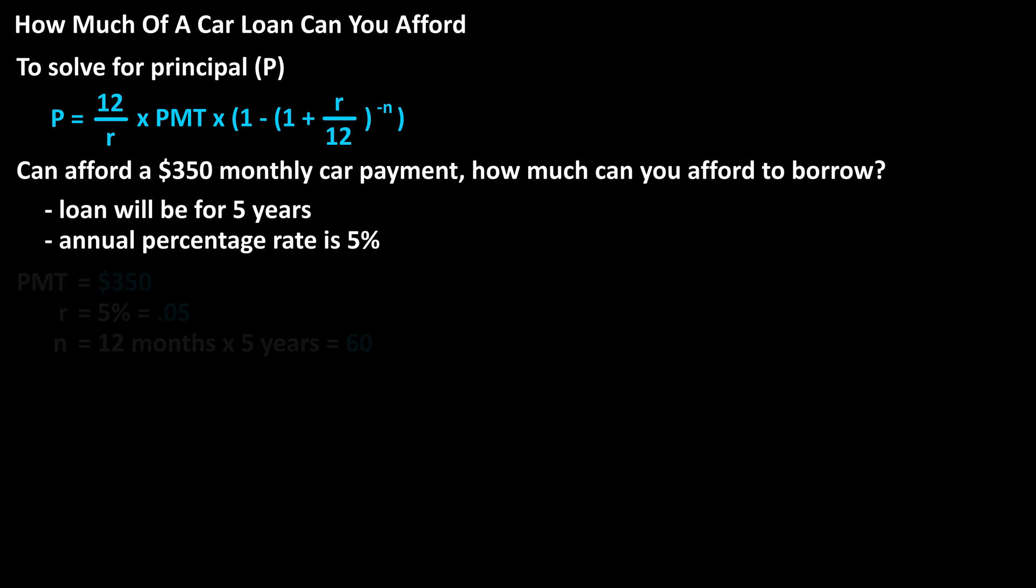So, for the formula, the payment will be $350. R, the rate, will be 5%, which we must change to a decimal by dropping the percent sign and moving the decimal two places to the left to get .05. And N, the total number of payments, will be 12 months times 5 years, which equals 60 total payments.